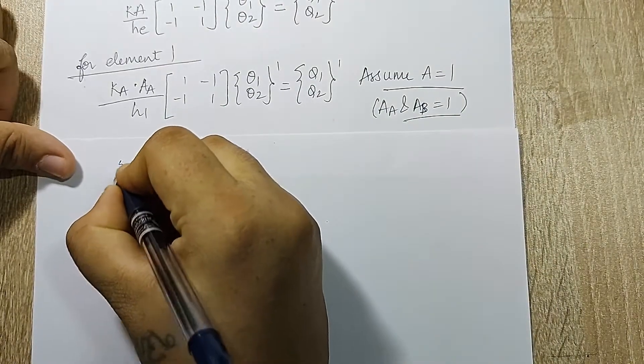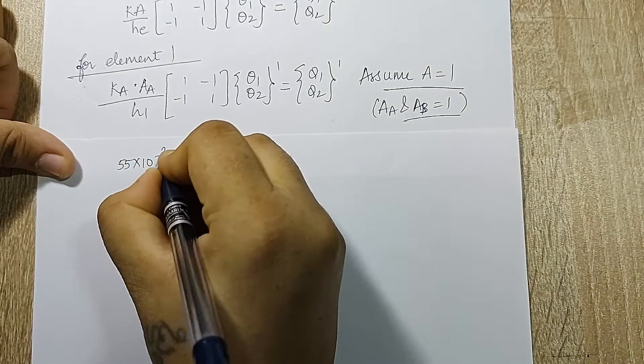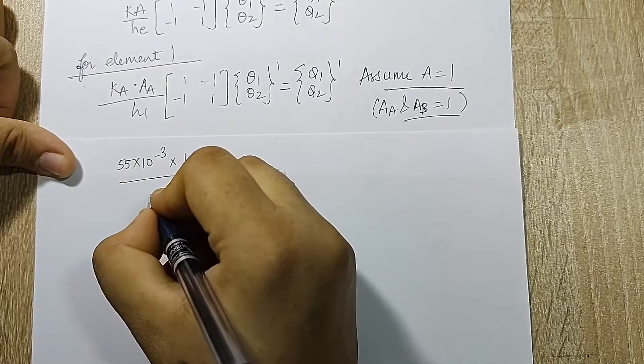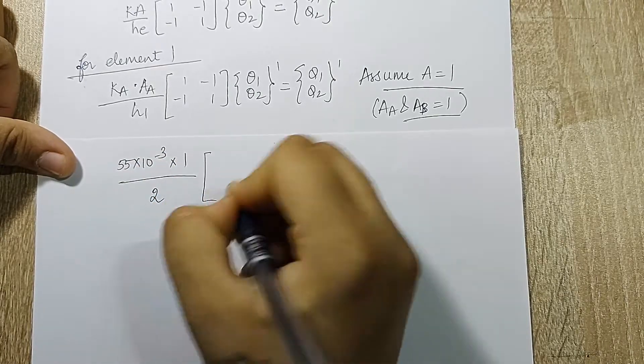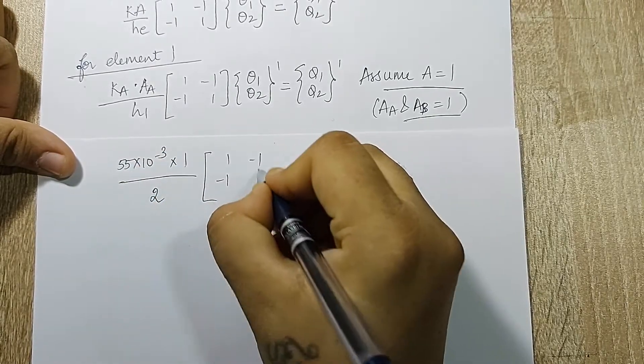The value of k_A is given to me as 55 into 10 raise to minus 3, A is 1, and h_1 is 2. I have [1, -1; -1, 1].